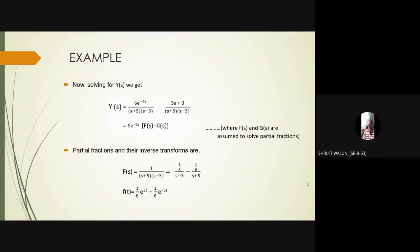So the partial fractions and their inverse transform are: f of s is equal to 1 upon s plus 5 into s minus 3 is equal to 1 upon 8 upon s minus 3 minus 1 upon 8 upon s plus 5.